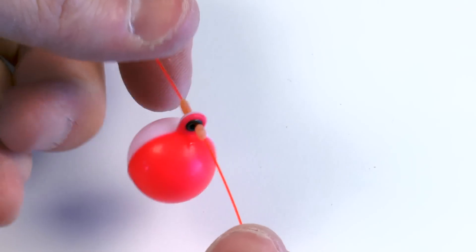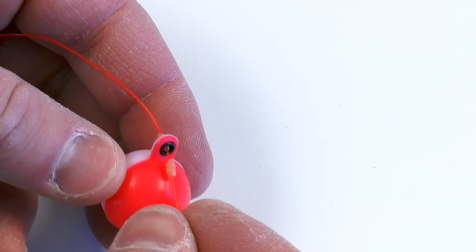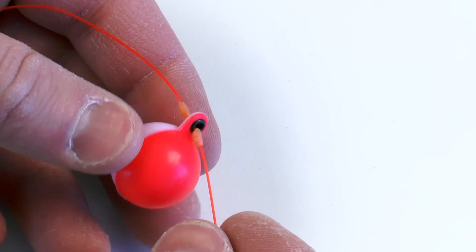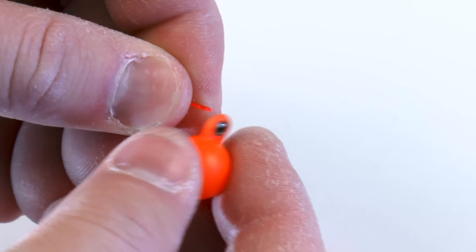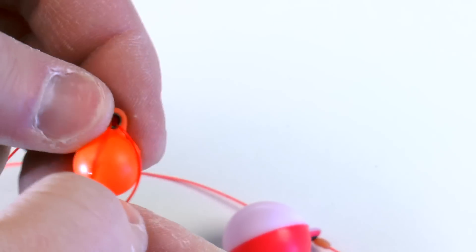The problem with the thingamabobber is it is not really 100% adjustable. I mean it is, but it really isn't. Once you get the thingamabobber on the line, like we traditionally do here with a loop-to-loop, you can't really easily move it without taking it off.